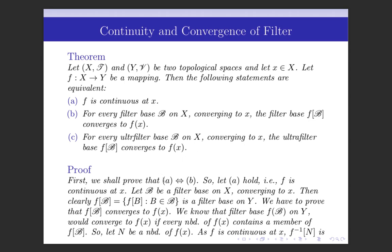First, we shall prove that A and B are equivalent. Let A hold, that means F is continuous at x, and we have to prove that for every filter base B on X converging to x, the filter base F(B) converges to F(x). So let B be a filter base on X converging to x. Then we have to prove that the collection F(B), containing F-images of members of B, converges to F(x). We have proved earlier that this collection is a filter base on Y, so we must show F(B) converges to F(x).